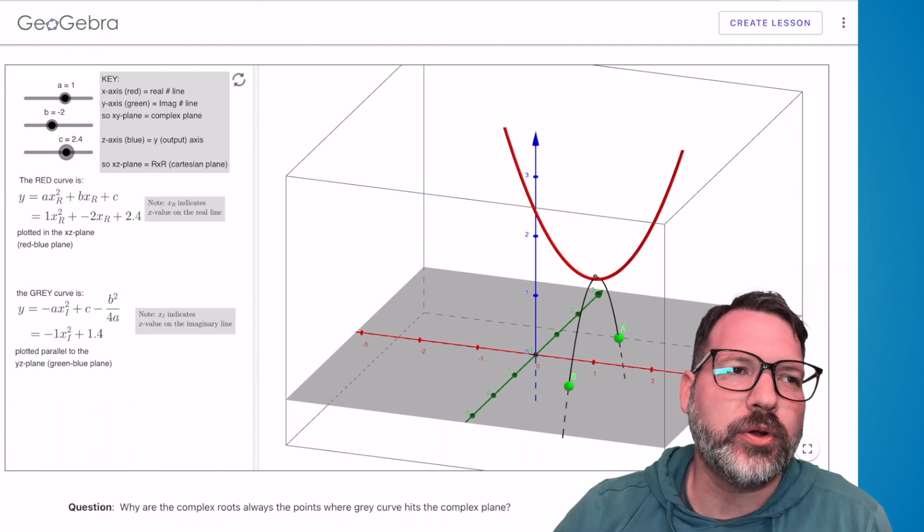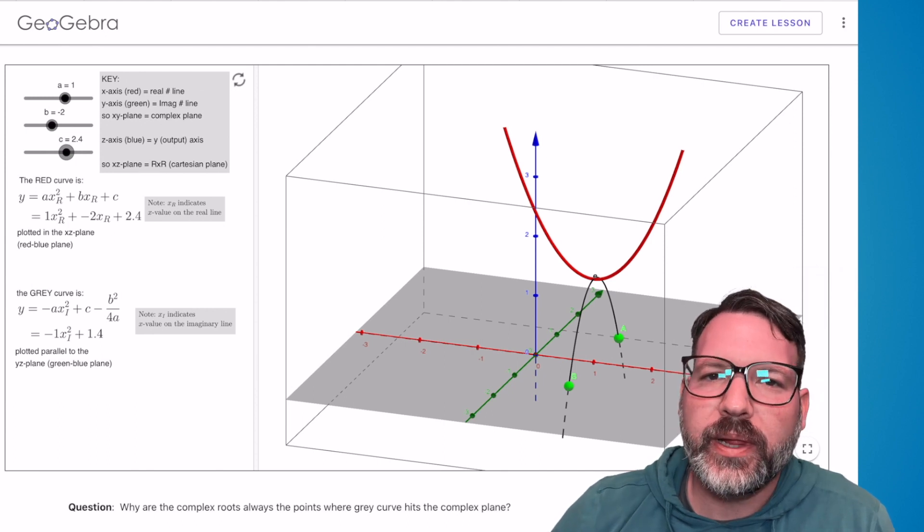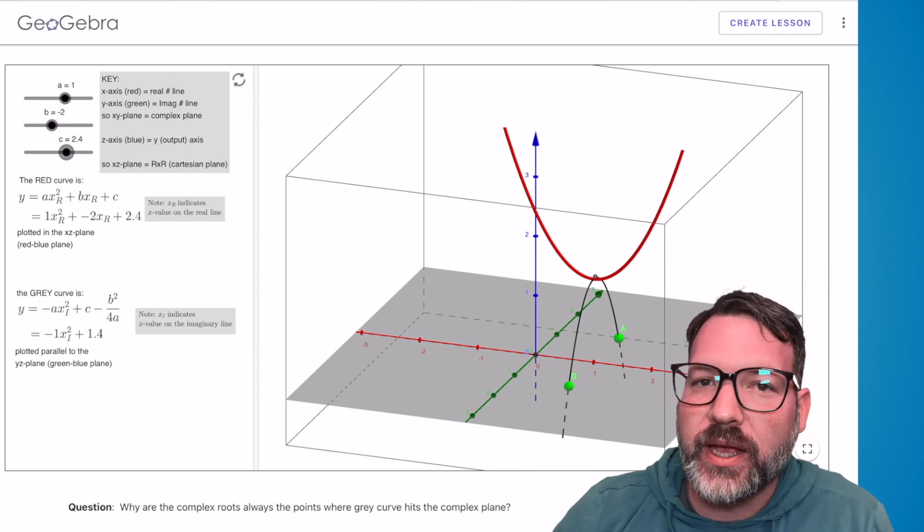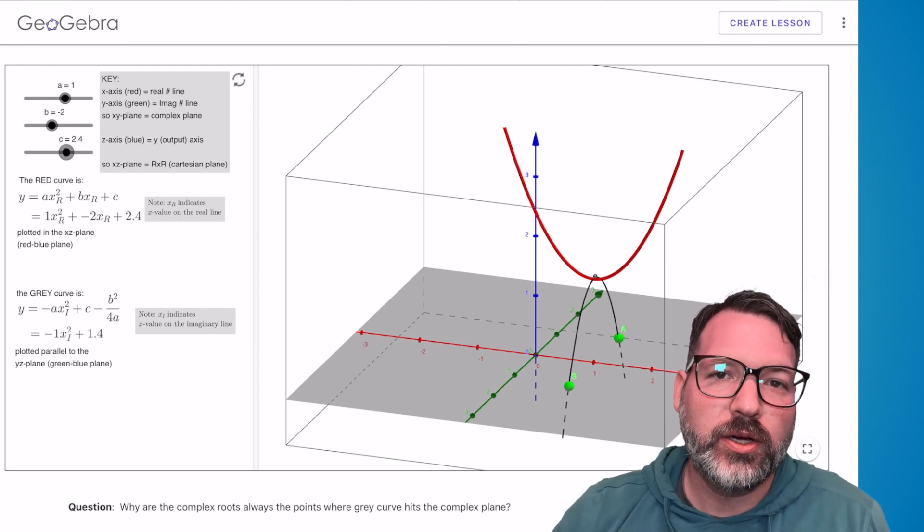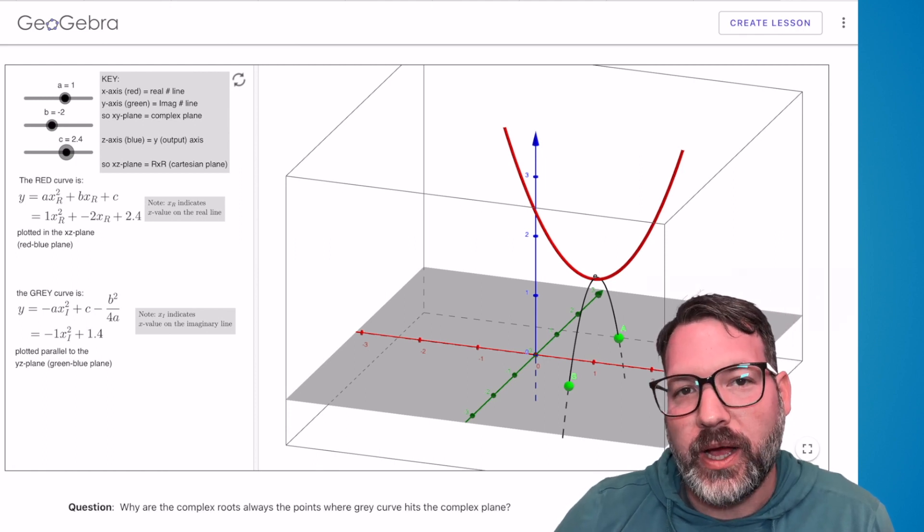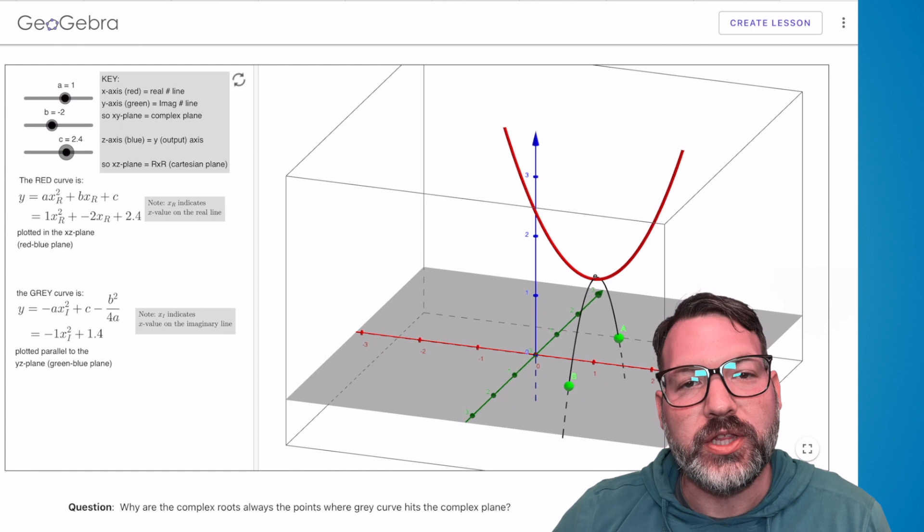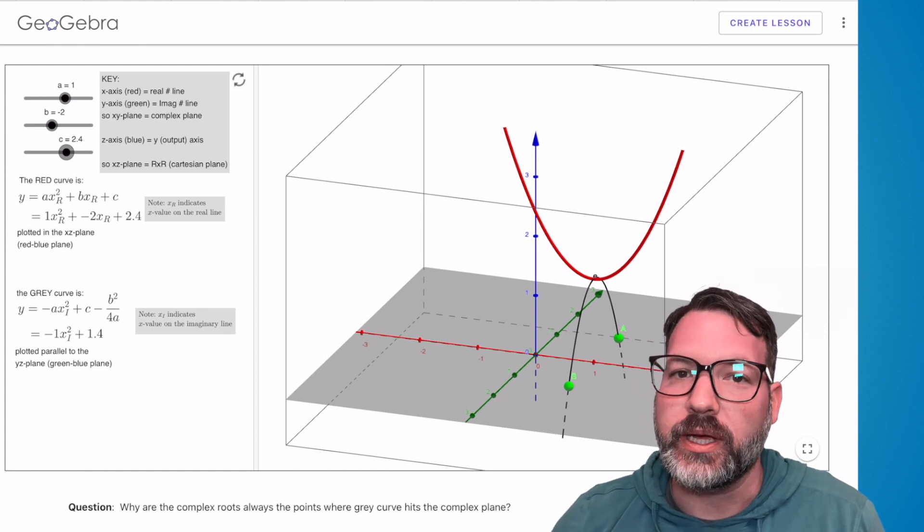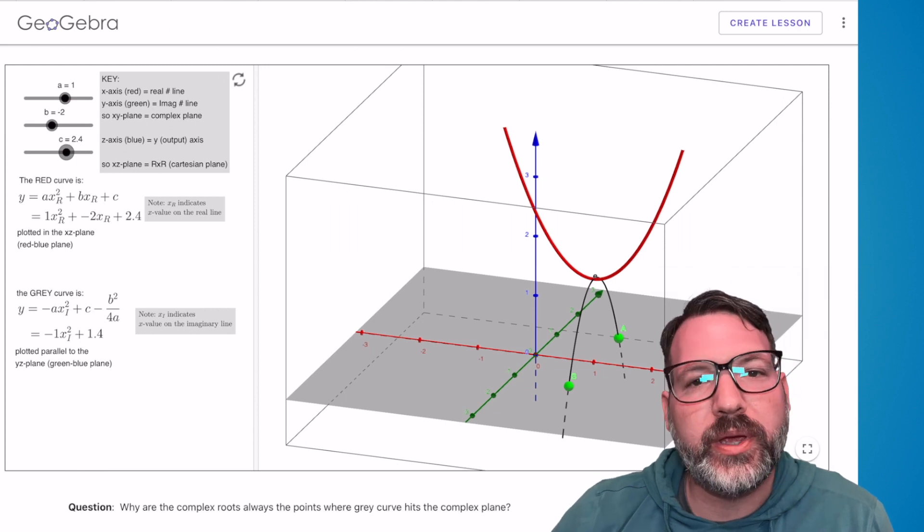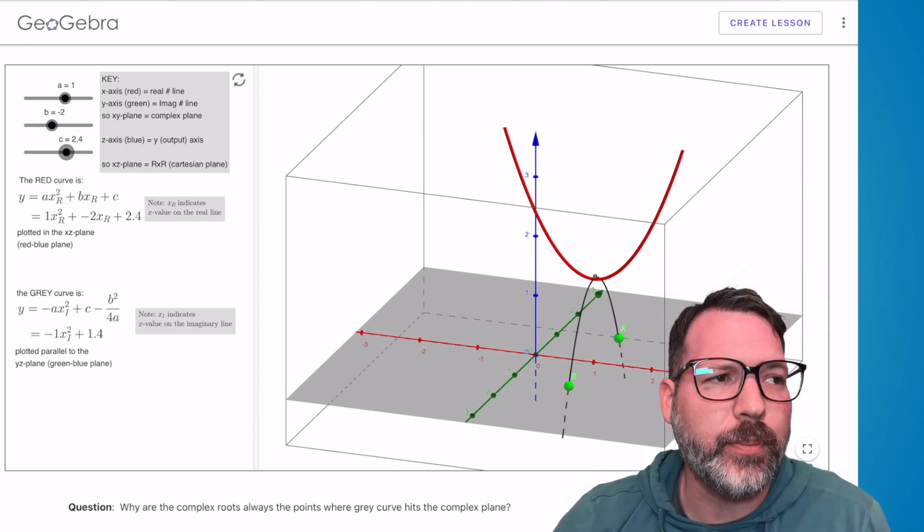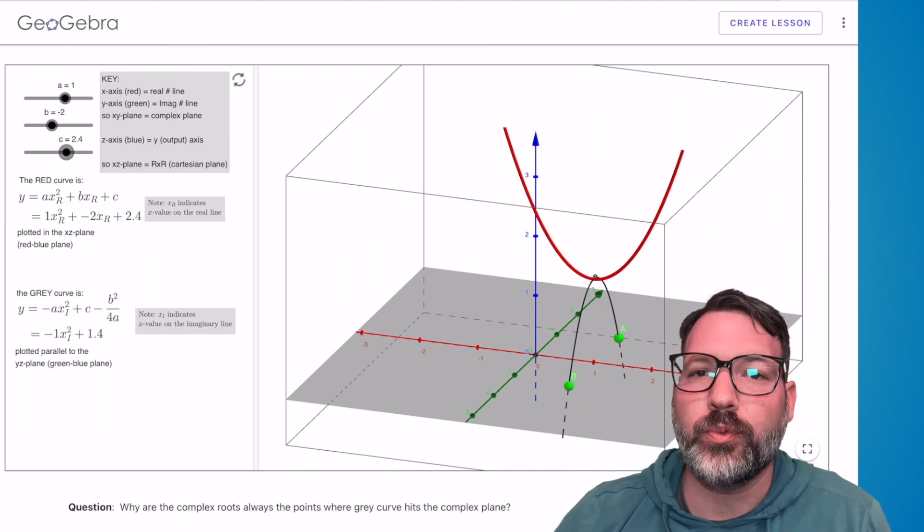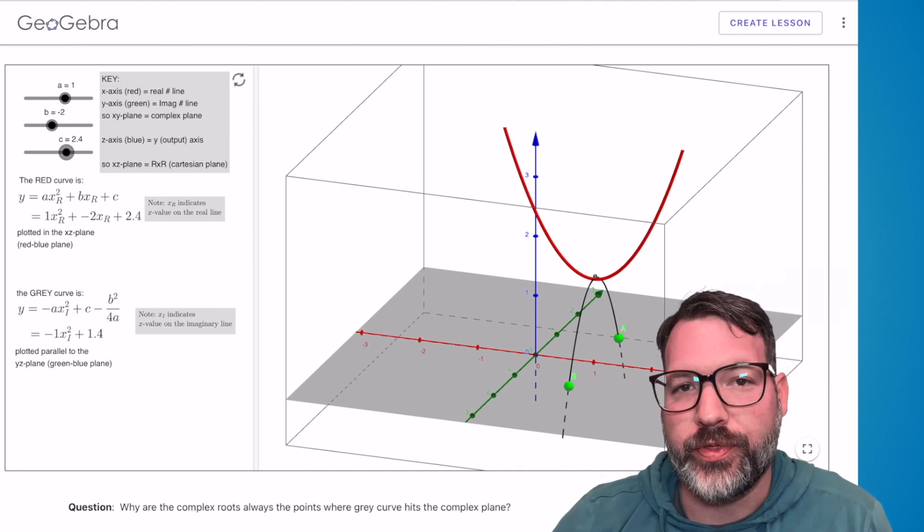Something I said in the original video I did is that the coordinate plane itself was a huge innovation. In the 16th century, Rene Descartes puts together this thing that all of a sudden lets us relate algebraic equations, like polynomials, to geometrical objects like parabolas. And so we can use the insights from geometry in order to inform our understanding of the algebra. The same thing is true here. The better we can visualize complex numbers in the complex plane itself, the more insights we're going to have into what's going on algebraically with these polynomials.